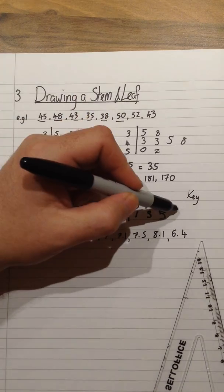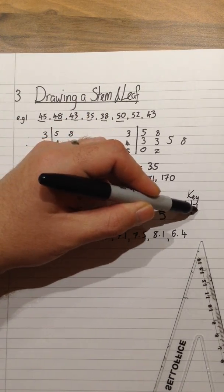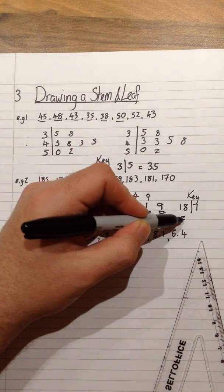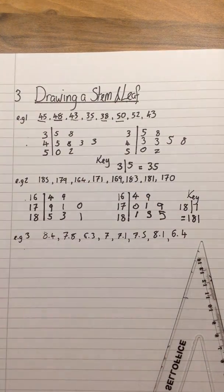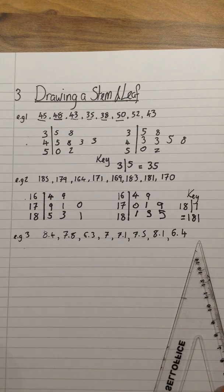So I'm going to go for if I've had 181. So in other words, 18, the line and 1, that would equal the number 181. You are basically telling somebody who has not drawn the diagram, they're just looking at your work, what it means.